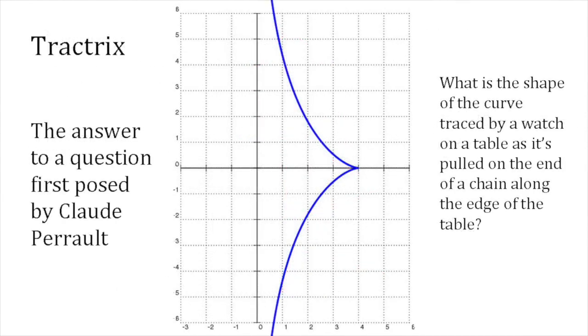In the same way that Gabriel's horn is the surface of revolution of part of the curve y equals one over x, so the pseudosphere comes from rotating a curve known as the tractrix, about the axis which it approaches more and more closely without ever touching.